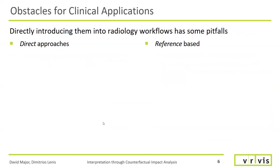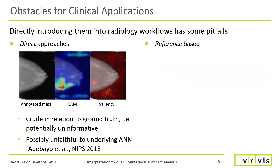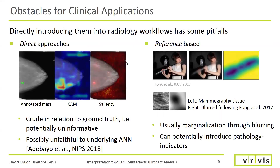However, introducing them directly into radiology workflows has some pitfalls. In the case of direct approaches, results are typically coarse and imprecise, as shown in these mammography examples. Additionally, recent work shows they are at times misleading, sacrificing validity for clearer pictures. Reference-based approaches usually use blurring for marginalization. Considering medical images, this can be potentially risky as it might introduce evidence for pathology. Here we show mammography tissue before and after blurring — the blurred version clearly should no longer be considered.